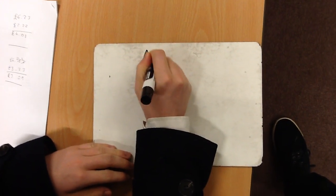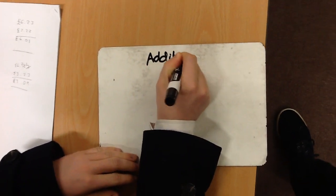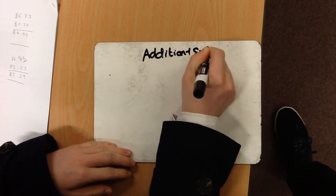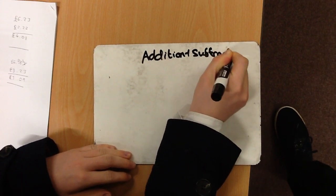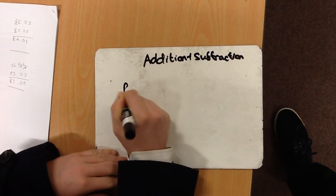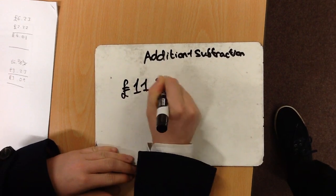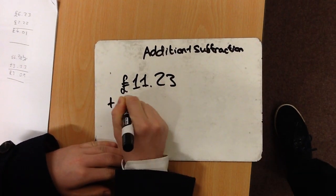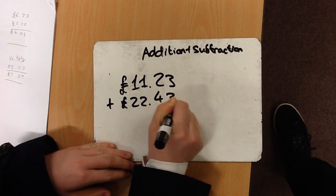OK, so today we are talking about addition and subtraction with money. Now then, the first sum that we will do is £11.23 add £22.43.